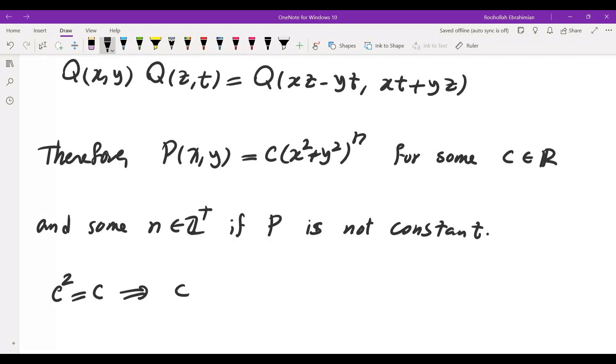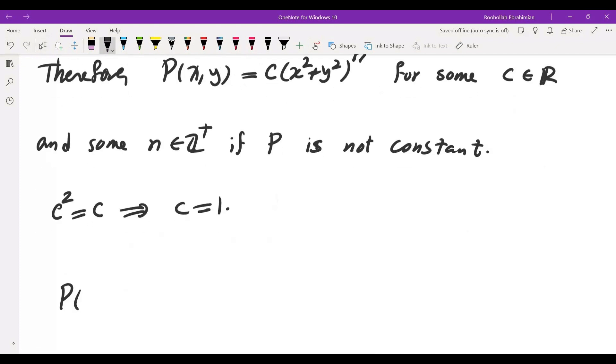Now if you substitute this P into the identity that they gave us we get C squared equals C which means C is 1 so eventually the answer is P of X Y is either 0 or 1 or is X squared plus Y squared to the power of N for some positive integer N and that is our final answer.